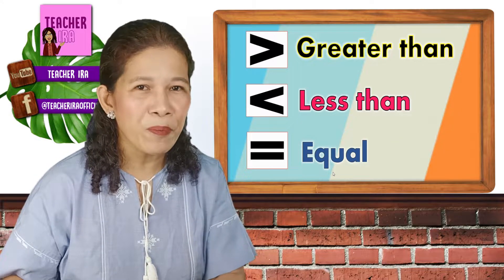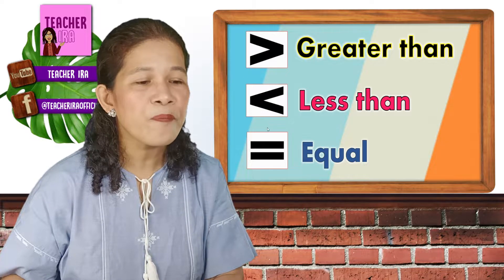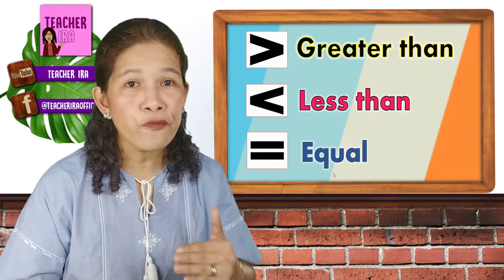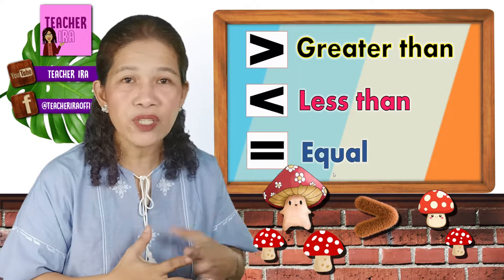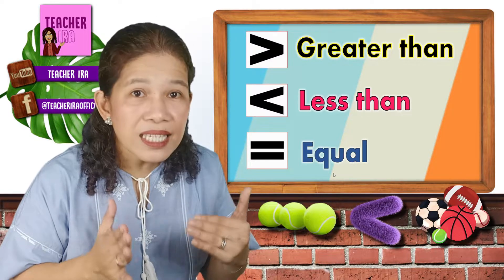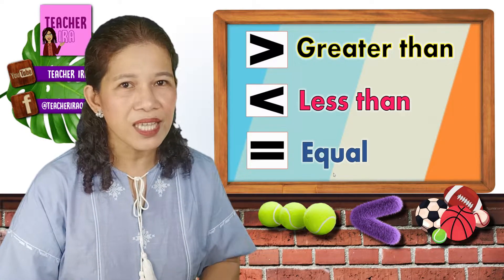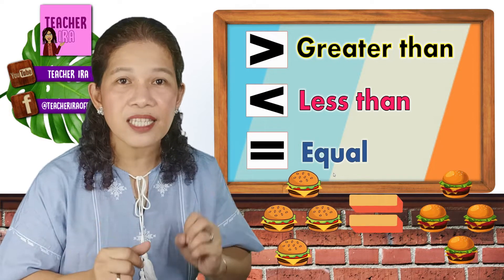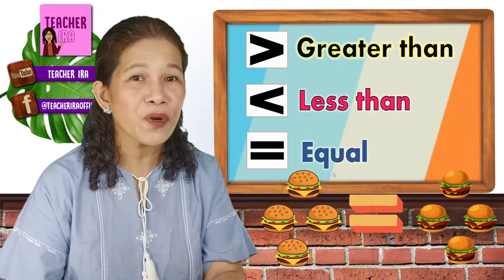Always remember that this is the symbol for greater than, and this is the symbol for less than, and this is the symbol for equal. When we say greater than, it means that the first set has more elements or objects compared to the second set. When you say less than, the first set has fewer number of objects compared to the second set. When you say equal, meaning both sets have the same number of elements or objects.